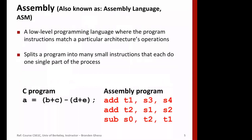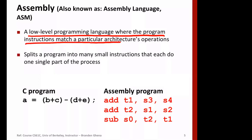Let's start with what an assembly language instruction looks like. Assembly language is a low-level programming language where program instructions match a particular architecture's operations. When a machine instruction is designed, it has to match with the underlying hardware — it has to look at the hardware capability and design instructions corresponding to that. It splits a program into many smaller sections where each can do a single part of the process.